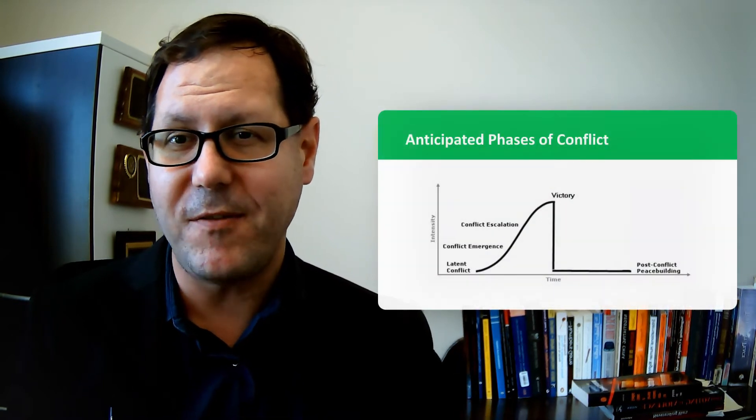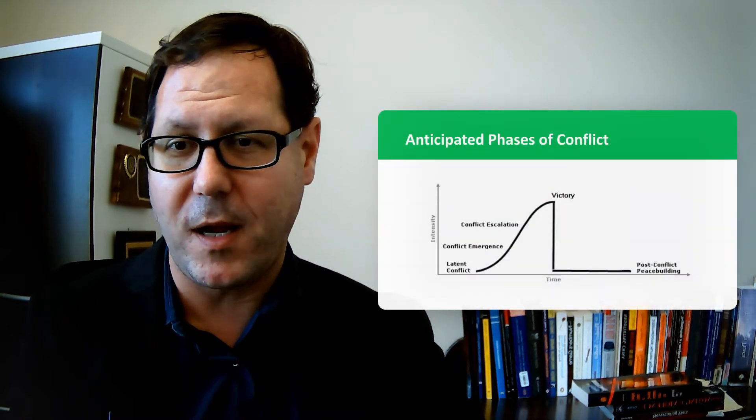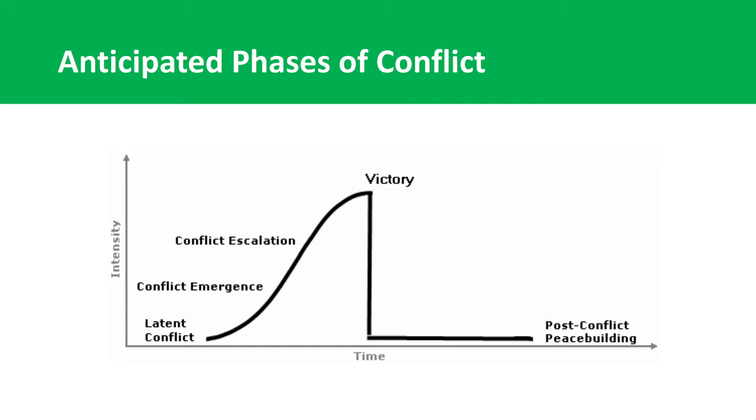So I'll just begin with a simple model of how a conflict might play out. Initially there's a latent conflict and then it emerges and the intensity of the conflict starts escalating. Suddenly the conflict is at a full-blown war. But as that escalation process comes along, one of the sides, the rebels or the government, is able to win a decisive victory. And then the intensity of the conflict collapses and we end up in post-conflict peacebuilding.